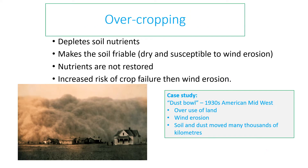Overcropping is when you plant too many crops, which depletes the nutrients in the soil. It makes the soil friable, meaning the soil becomes dry and susceptible to being blown away by the wind. Nutrients don't get restored and you get an increased risk of crop failure from wind erosion. An example of this was the Dust Bowl in the 1930s in America where overuse of land led to wind erosion, and the wind and dust actually traveled thousands of kilometers.